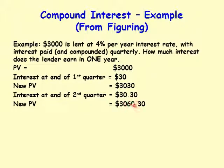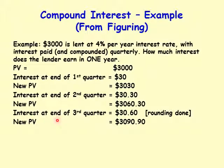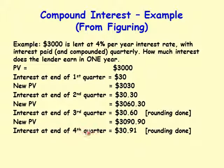The new principal value going into the third quarter is three thousand and sixty dollars and thirty cents. Interest at the end of the third quarter is one percent of that, which is thirty dollars and sixty cents — rounded up. In the USA the smallest unit of currency is one cent, which is a hundredth of a dollar. The new principal is three thousand and ninety dollars and ninety cents.